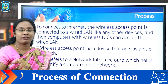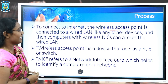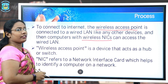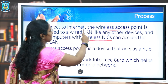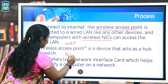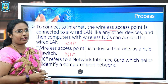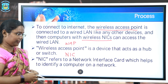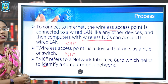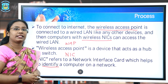To connect to the internet, the wireless access point is connected to the wired LAN like other devices. Computers with wireless NIC can then access the wired LAN. Two important terms here are: wireless access point, also known as WAP, and NIC, that is Network Interface Card. A wireless access point is a device that works as a hub or a switch which connects all the devices together. NIC refers to Network Interface Card which helps to identify a computer on a network. Any device that wants to connect to the internet must have a NIC installed.